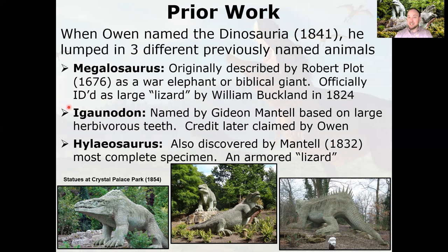Iguanodon was named by Gideon Mantell and was exciting because it was based on large herbivorous teeth. Megalosaurus was a carnivore, which fit the model for lizards and reptiles — think crocodiles or Komodo dragons. But Iguanodon was herbivorous. Try to think of a large reptile that's herbivorous today; it wasn't really known at the time, making this something radically different. Credit was later claimed by Owen, who was problematic even by the standards of his own day.